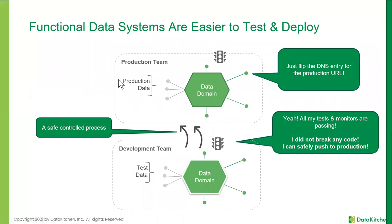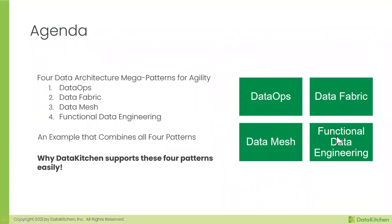The functional pattern makes it easier to create parallel versions. Your production team runs on production data; your development team takes the same or updated data, runs it through, and if everything passes you can flip it or run in parallel — a red-green deploy — to verify it works. This is a safer, more controlled, complexity-reducing process. These three patterns — DataOps, data mesh, and functional data engineering — applied on whatever data fabric you have, are the way to achieve agility.